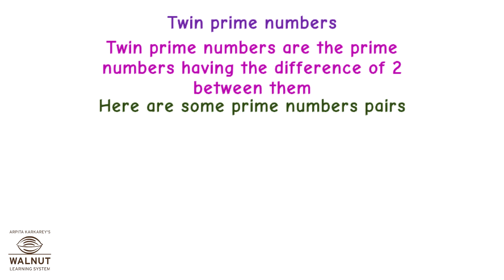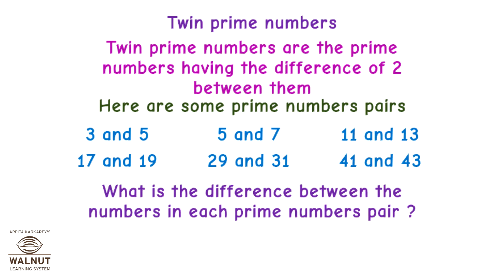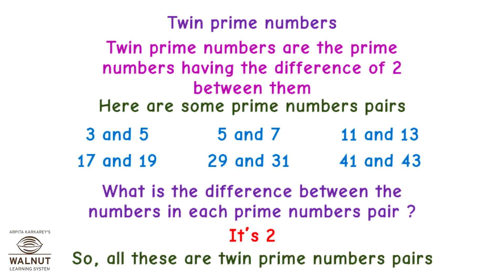Here are some Prime Numbers pairs: 3 and 5, 5 and 7, 11 and 13, 17 and 19, 29 and 31, 41 and 43. What is the difference between the numbers in each Prime Numbers pair? It's 2. So all these are Twin Prime Numbers pairs.